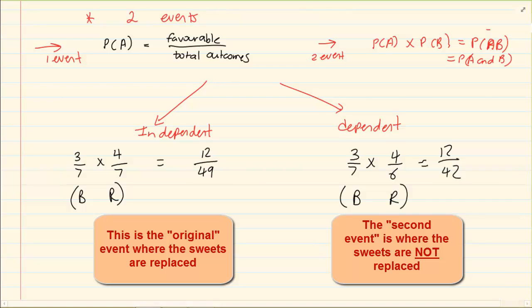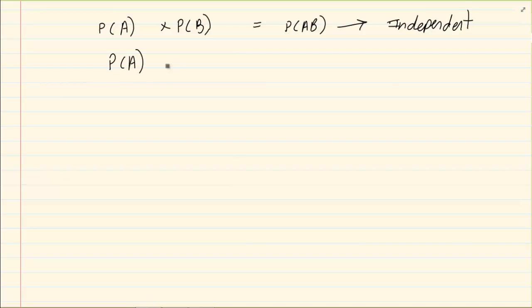But there is a rule that says that if I take the probability of A times the probability of B, and then it is equal to the probability of AB, then this event is independent. If however I take the probability of A times the probability of B, but now remember when I'm talking of the probability of A times the probability of B, I'm talking of your original like how when you were doing it in grade 10, and it is not equal to the probability of AB as we have been calculating it, then they are dependent events.